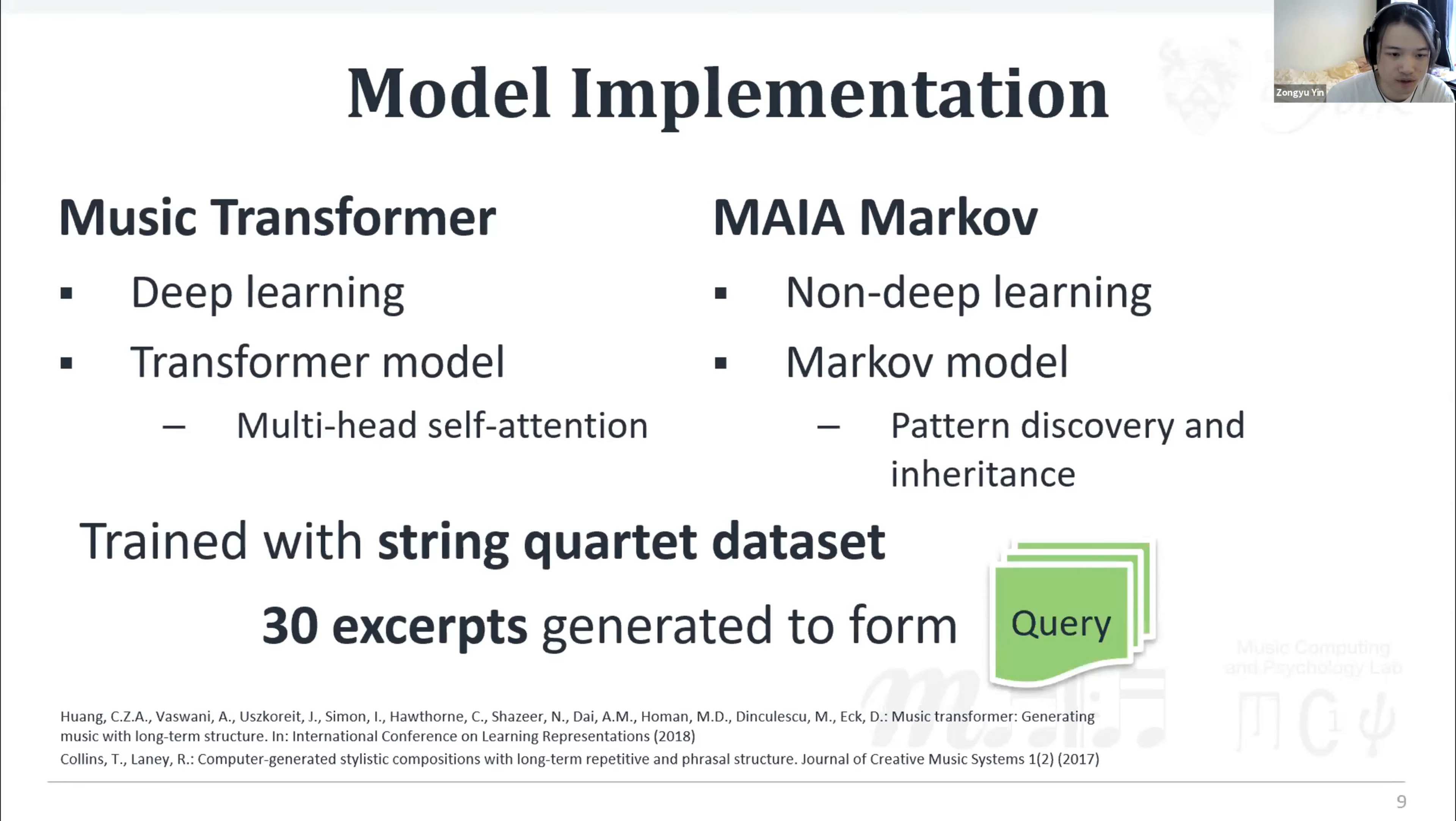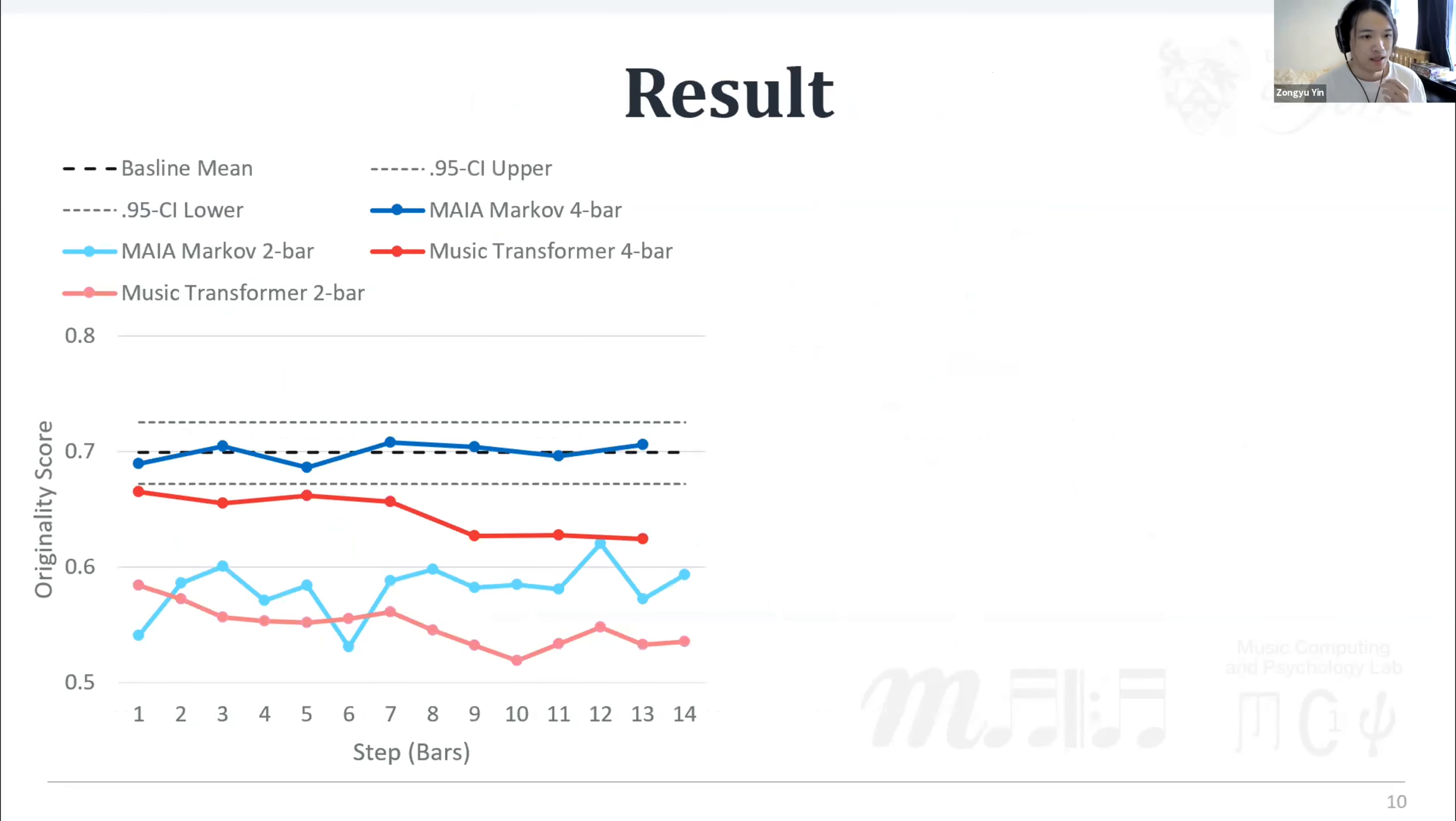Both models were trained with the string quartet dataset mentioned above and then generated 30 excerpts for each of them to form the query corpus. The line plot on the left shows that the change of originality score along with the steps in bars. The dotted line represents the baseline obtained from human composed corpus. The blue line and the red line represent the originality of MAIA Markov and the Music Transformer respectively.